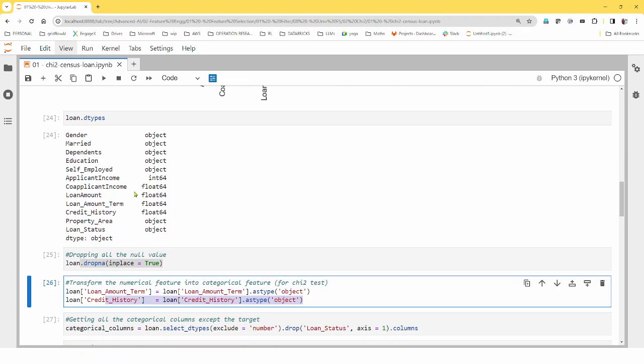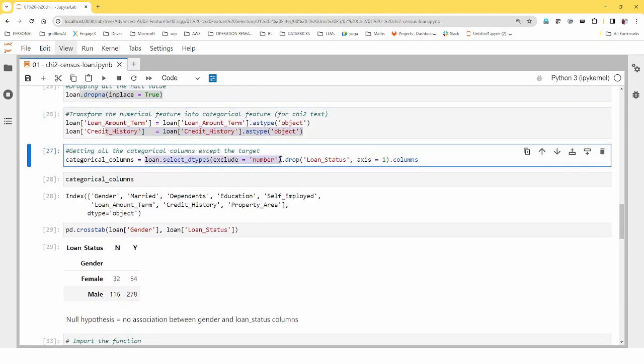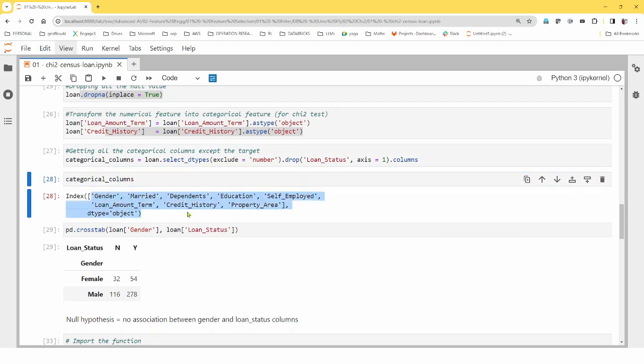There are a few null values as well, so get rid of the null values and convert it to the object column, because loan amount term and credit history. They are somehow like a numeric value, so we just convert it to an object column. In fact, making it categorical in nature.